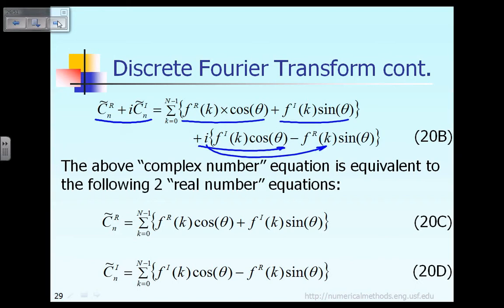When you compare equation 20b, you can see clearly there is a small i here, and also a small i in equation 20b. That means the c_delta_ni — the one shown in green — is exactly corresponding to this term right there.